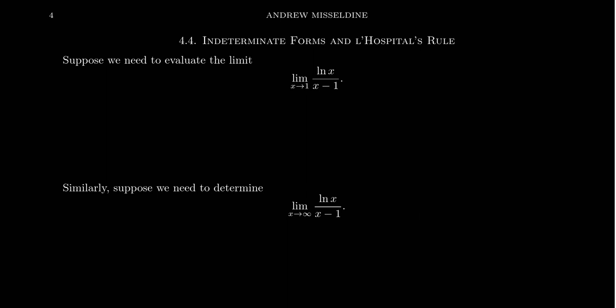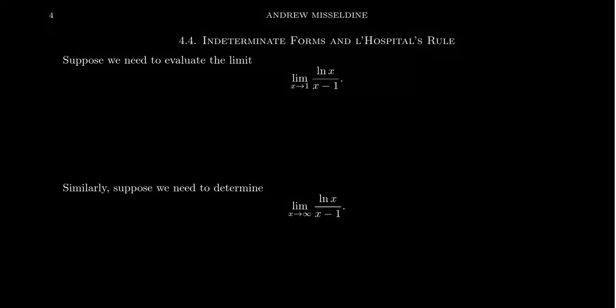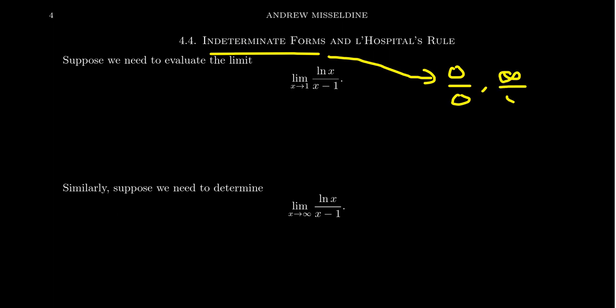In section 4.4 of our lecture series, Math 1210 Calculus 1, we're going to talk about so-called indeterminate forms. These were things of the form 0 over 0 or infinity over infinity. We call them indeterminate forms because this form itself is insufficient to determine what the limit is.